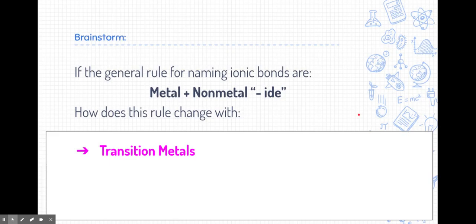All right, just let's brainstorm this a little bit. So remember, we have a general rule for naming ionic compounds. We take the metal first, and then we take the nonmetal, and we end it in ide. What changes or what additions can we add to this rule when we include transition metals?